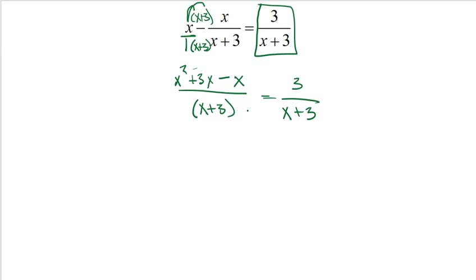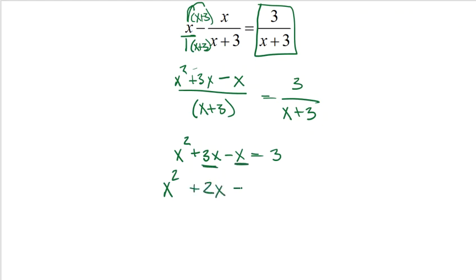My denominators are both the same, so I only have to worry about the numerators being equivalent. Now I realize this is a quadratic. Let's bring everything to the left-hand side: x squared plus 2x minus 3 equals 0. How do I solve a quadratic? I can factor, use the quadratic formula, or complete the square.